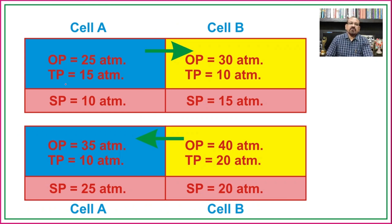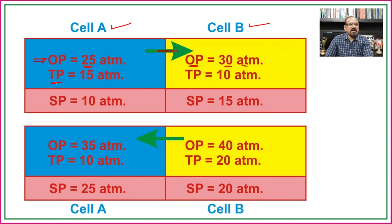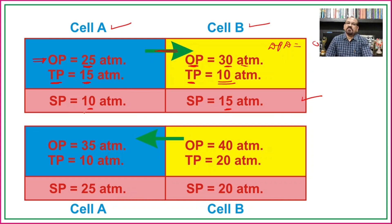Consider two cells A and B. Cell A has osmotic pressure 25 atm and turgor pressure 15 atm; cell B has osmotic pressure 30 atm and turgor pressure 10 atm. Using DPD = OP − TP: SP of cell A = 10 atm, SP of cell B = 15 atm. Although cell B has higher osmotic pressure, its DPD is also higher, so water moves from cell A to cell B.